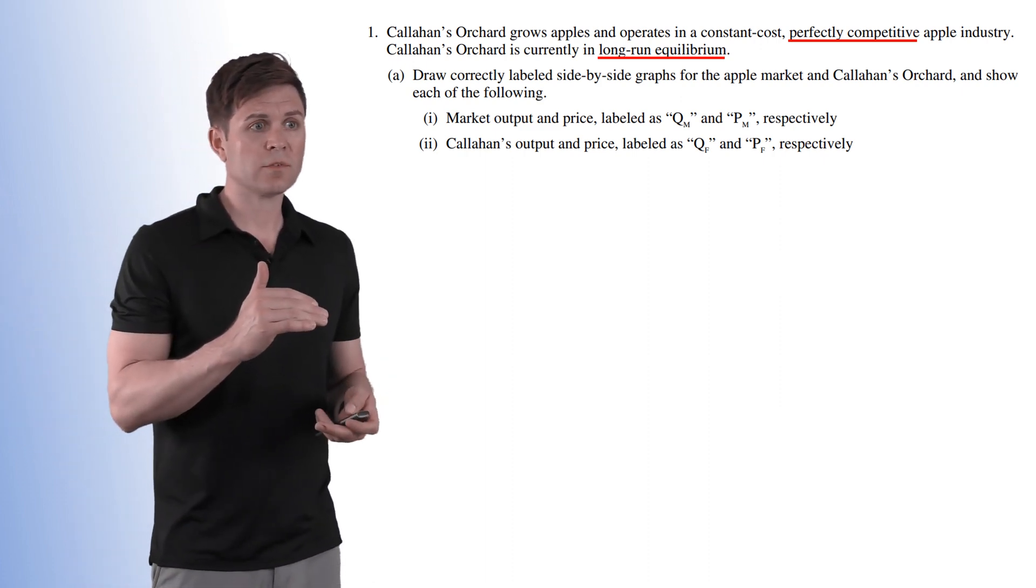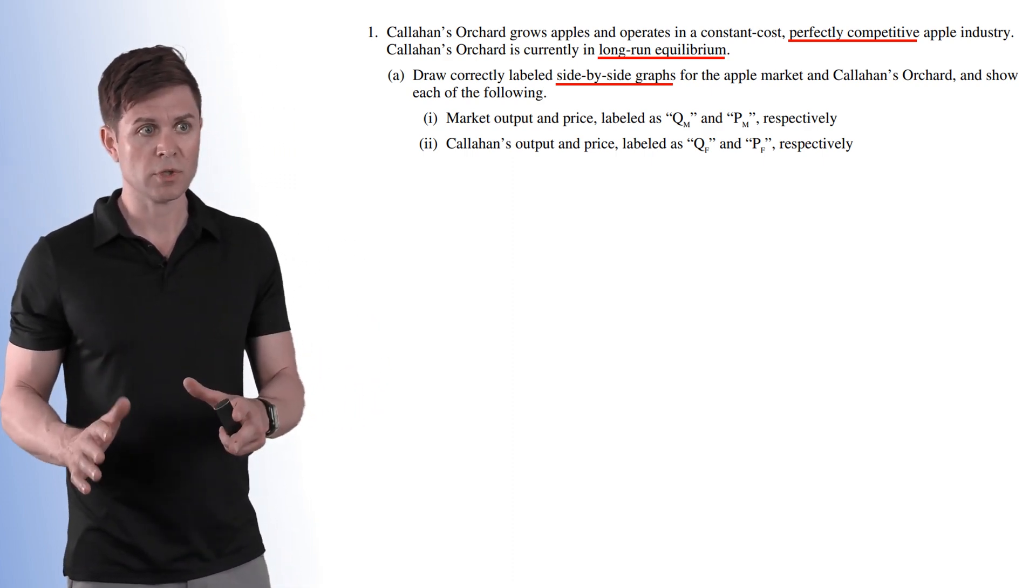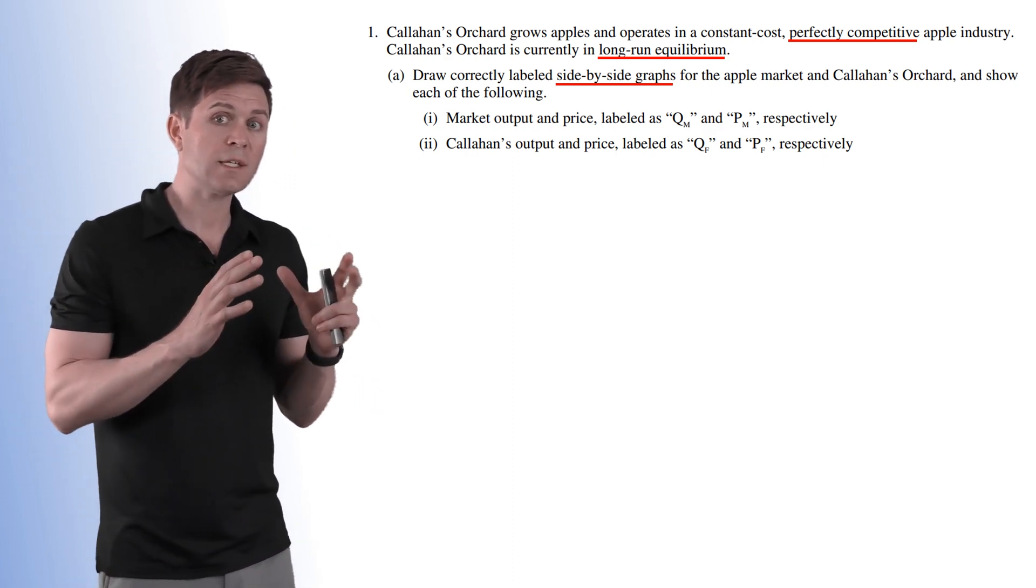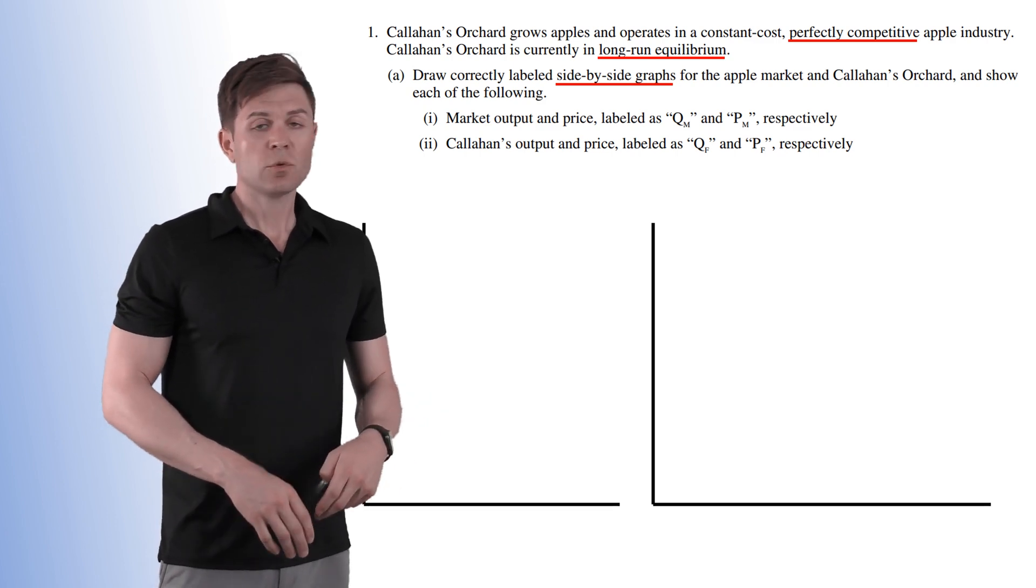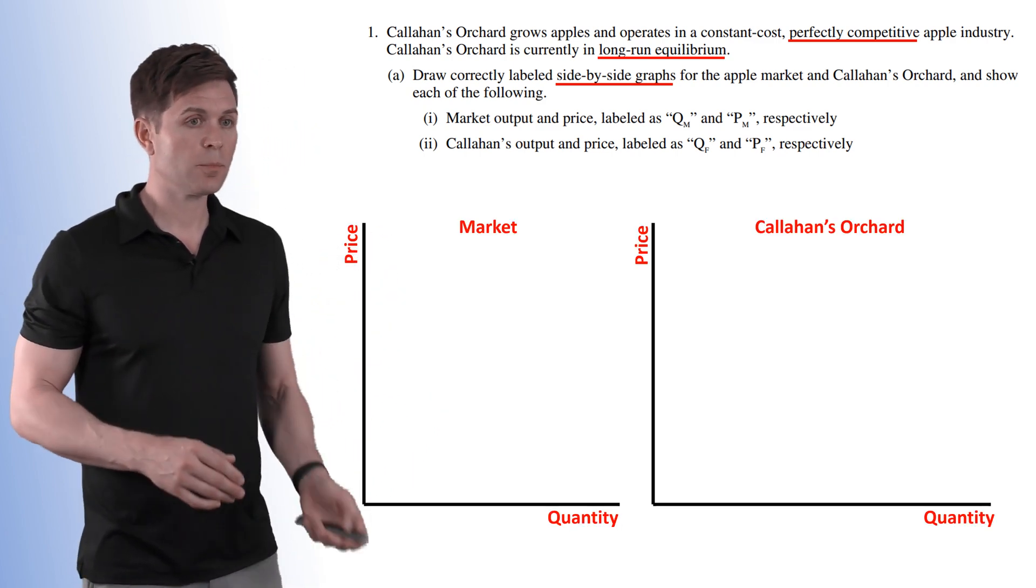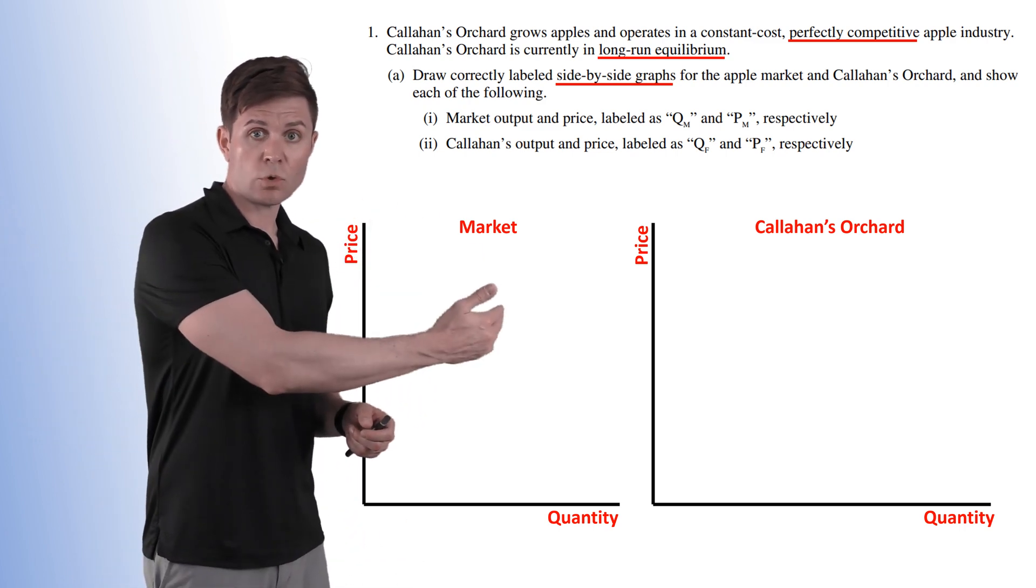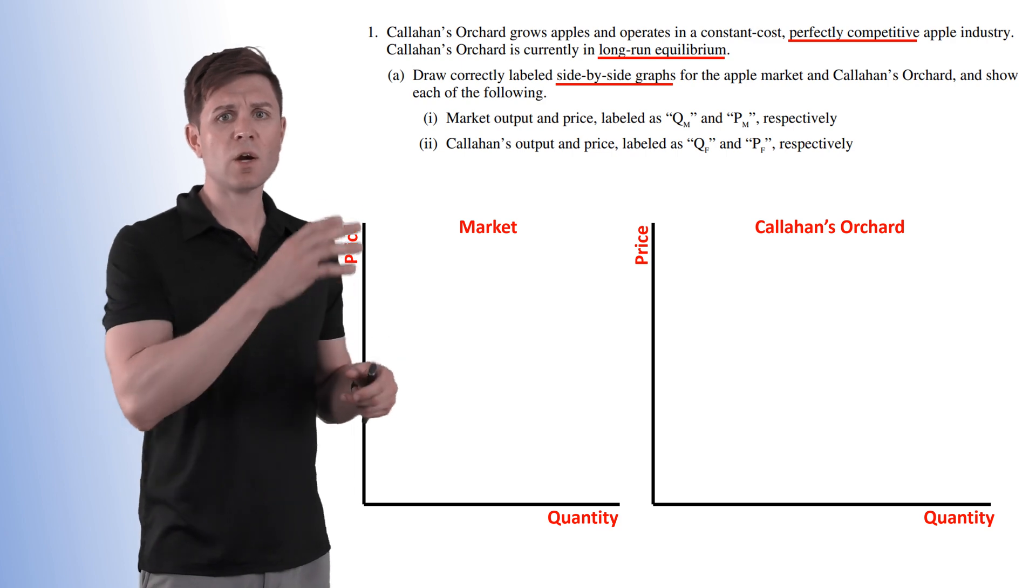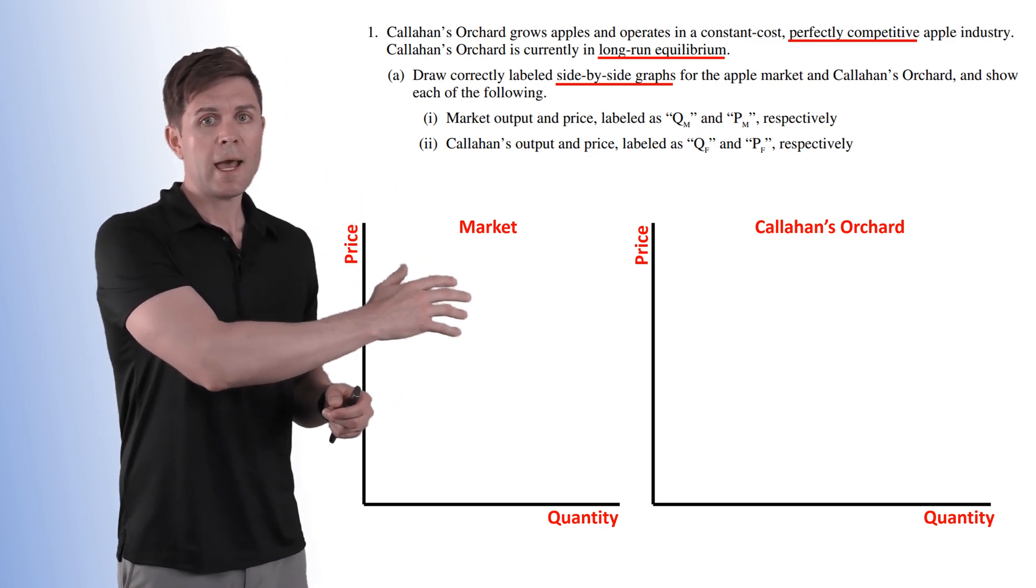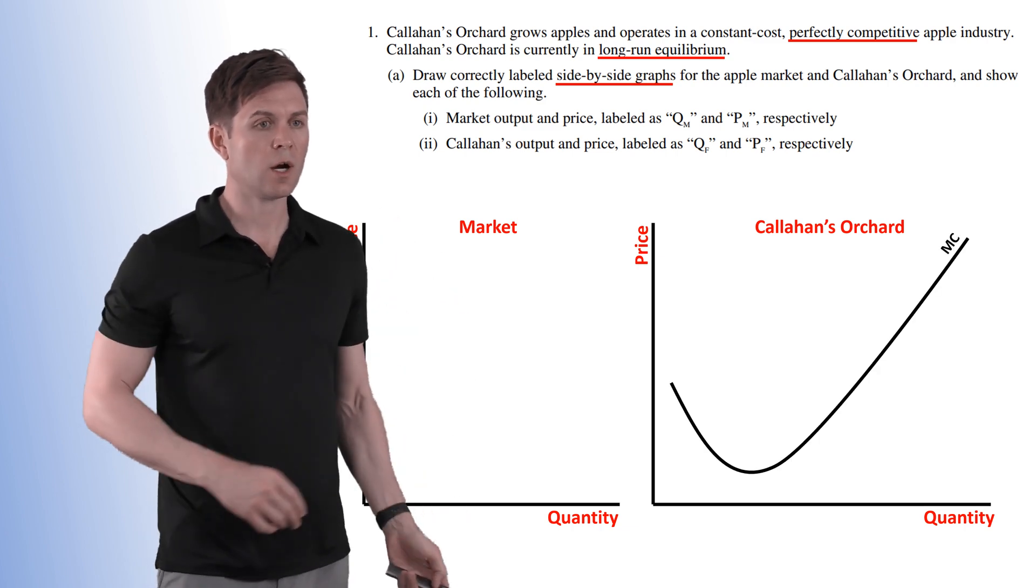So now what part A wants us to do is draw a correctly labeled side-by-side graph for the apple market and Callahan's Orchard and show each of the following. So we need to get these two models up there. We got our side-by-sides, we need our labels price and quantity, make sure you're putting them on there. We got our market on the left and we got Callahan's Orchard on the right. Now it's easier to start with the actual firm and then move to the market afterwards because it's a little more difficult to get the point where you want your cost curves to be.